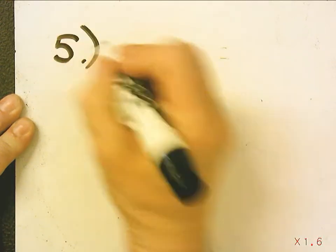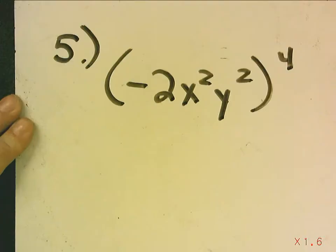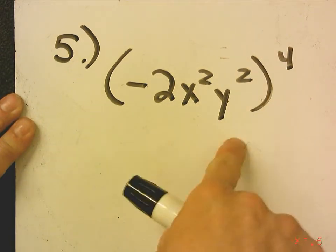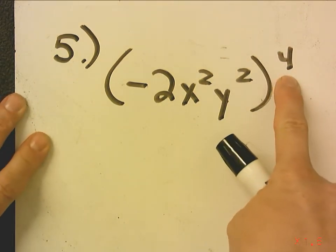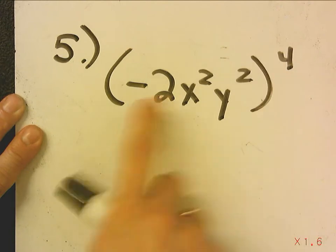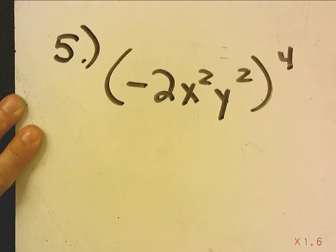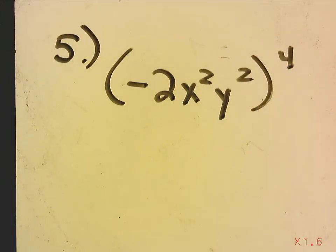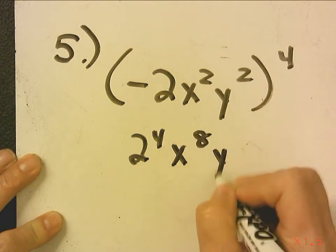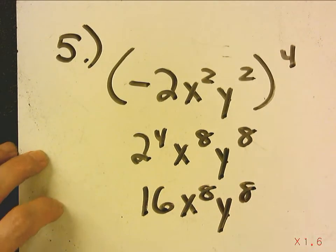Number 5: negative 2, x squared, y squared to the fourth. The first thing I want you to notice is that whenever there's a negative inside the parentheses raised to an even power, this automatically becomes a positive number. A negative raised to an even power is positive. A negative raised to an odd power would stay negative. So this becomes 2 to the fourth, x to the eighth, y to the eighth, and that's 16x to the eighth, y to the eighth — and it's positive.